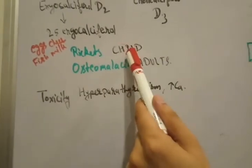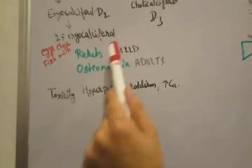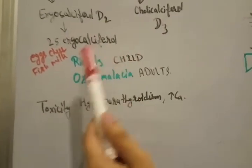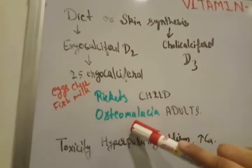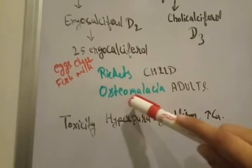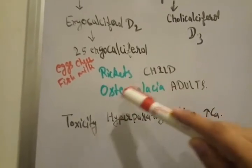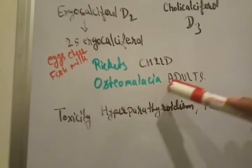This deficiency of vitamin D in child causes rickets. I am going to teach this topic rickets individually not here. In case of adults it causes osteomalacia. Osteomalacia means weakness of bone, bone weakness, malacia.